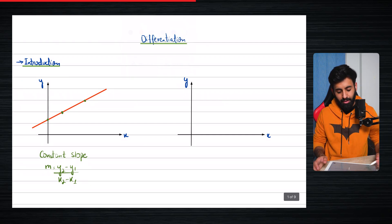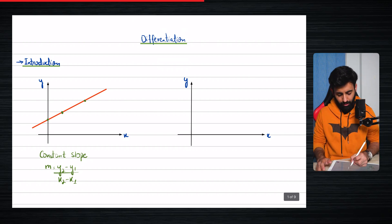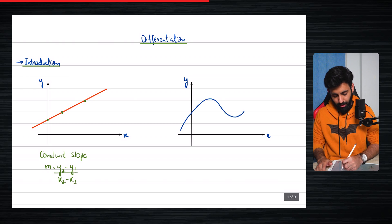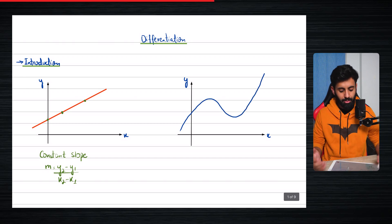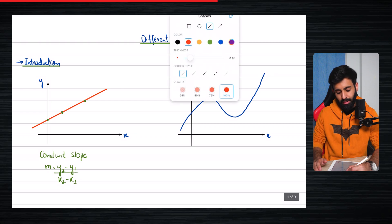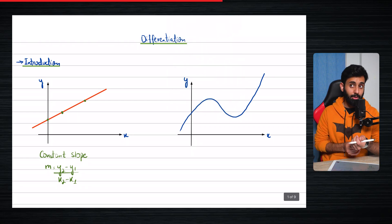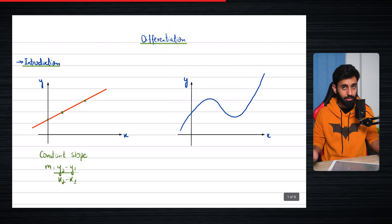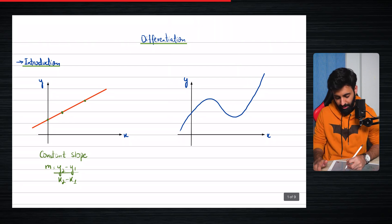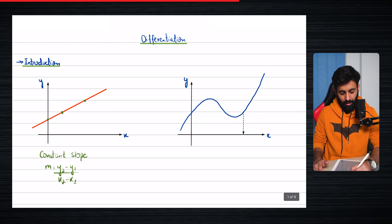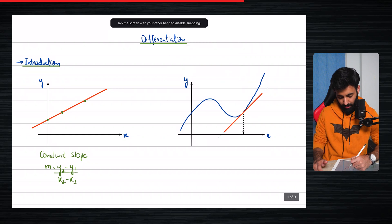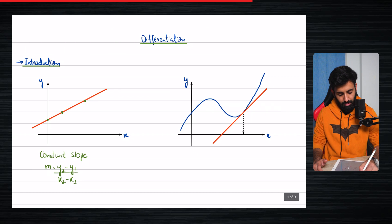We use differentiation to find the gradient of a curve. At this point you may still be thinking that we already know how to do that — and you're right. You absolutely do know how to find the gradient of a curve, and that is through the help of a tangent. You might have done this in the topic called graphs of functions. The idea is that you pick a point where you want to find the gradient, you make a tangent at that point, then you pick any two points lying on the tangent and find the gradient.